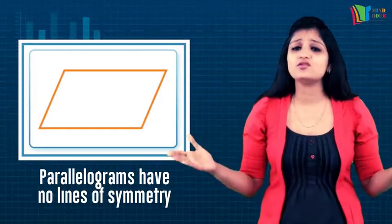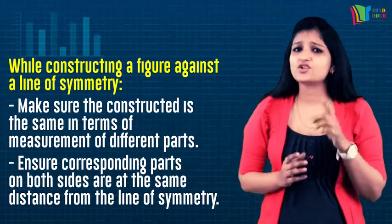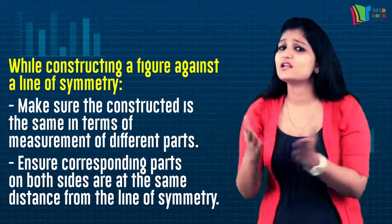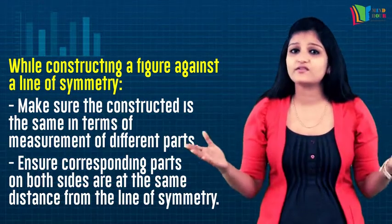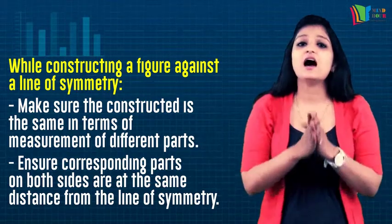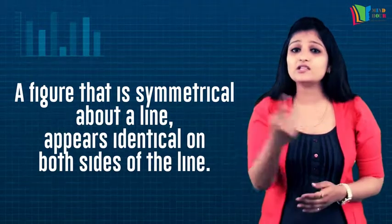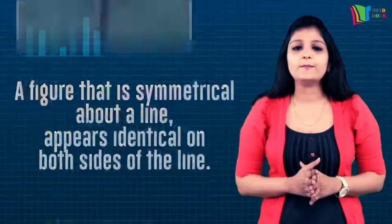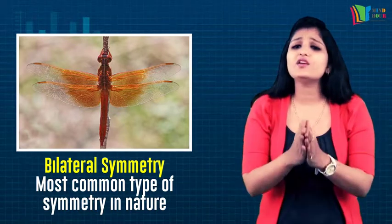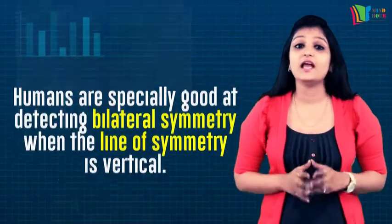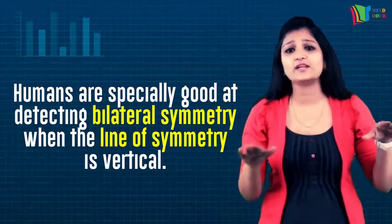When completing a given figure against a given line of symmetry, make sure that each part of the constructed figure is equal in measurement to its corresponding part in the given figure. Each point on the given figure and its corresponding point on the constructed figure are at the same distance from the line of symmetry. A figure is said to be symmetrical about a line if it is identical on either side of the line. Bilateral symmetry is the most common type of symmetry found in nature, occurring in almost all animals and many plants. In fact, humans are especially good at detecting bilateral symmetry when the axis of symmetry is oriented vertically.